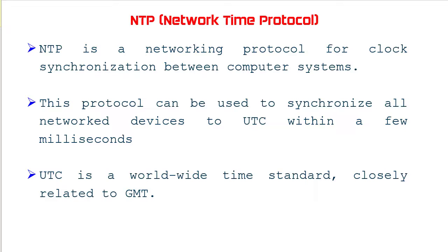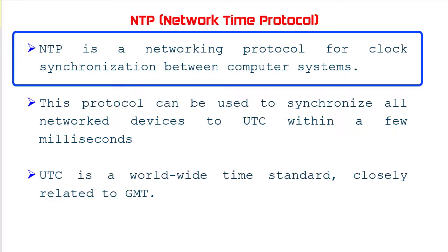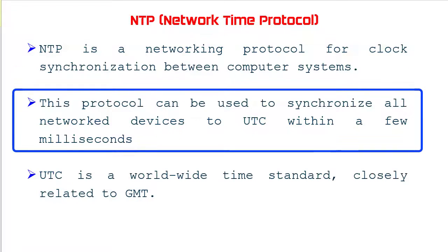As I am using Network Time Protocol, a few words regarding it. Network Time Protocol is a networking protocol for clock synchronization between computer systems. It is used to synchronize computer clock times in a network. The protocol can synchronize all network devices to Coordinated Universal Time within a few milliseconds — 50 milliseconds over the public internet, and under 5 milliseconds in a LAN environment.